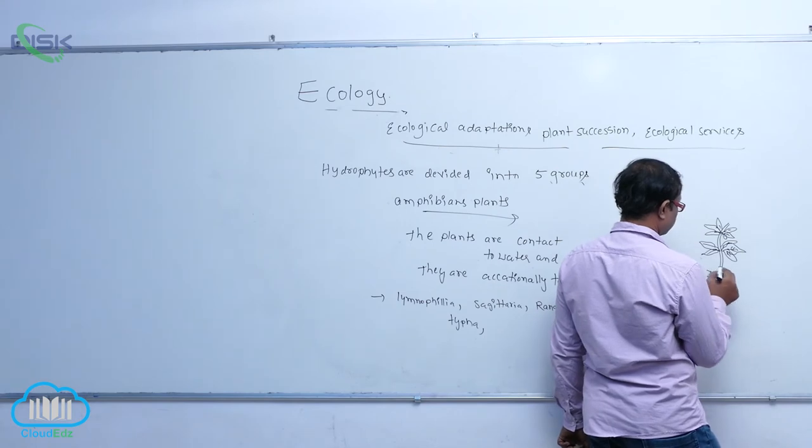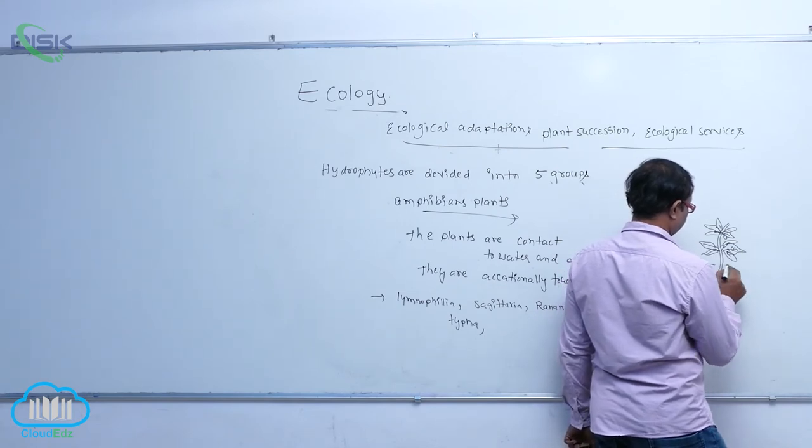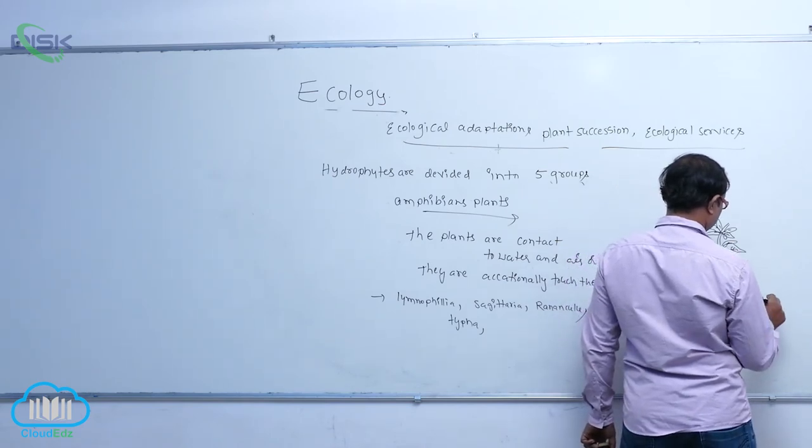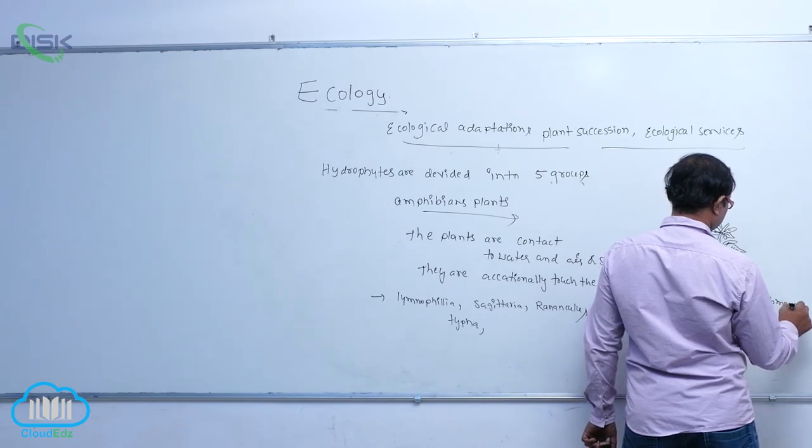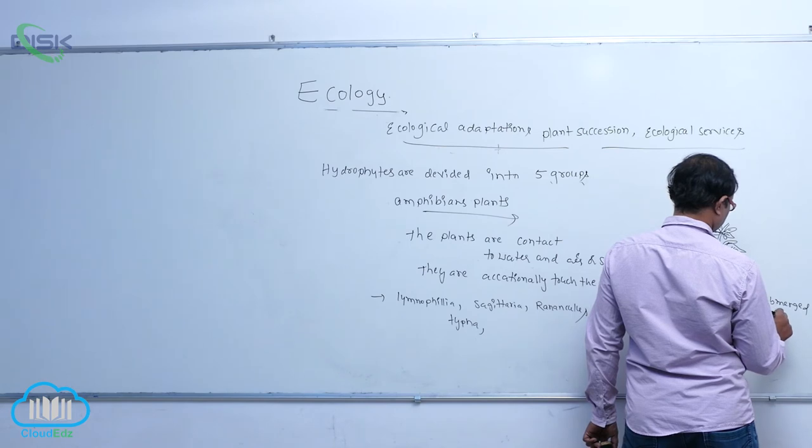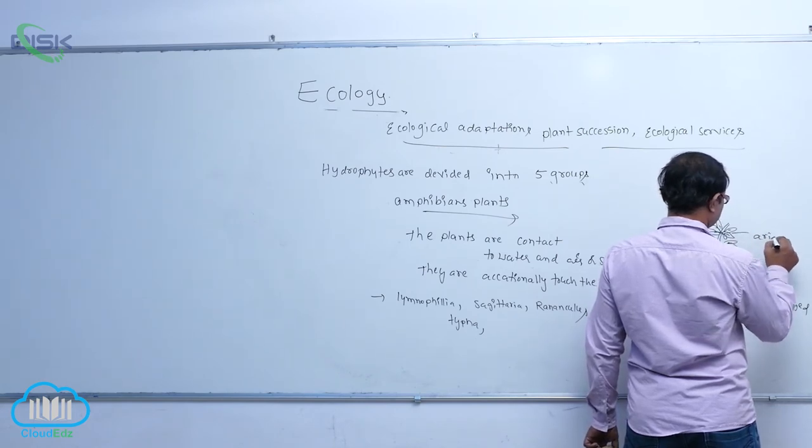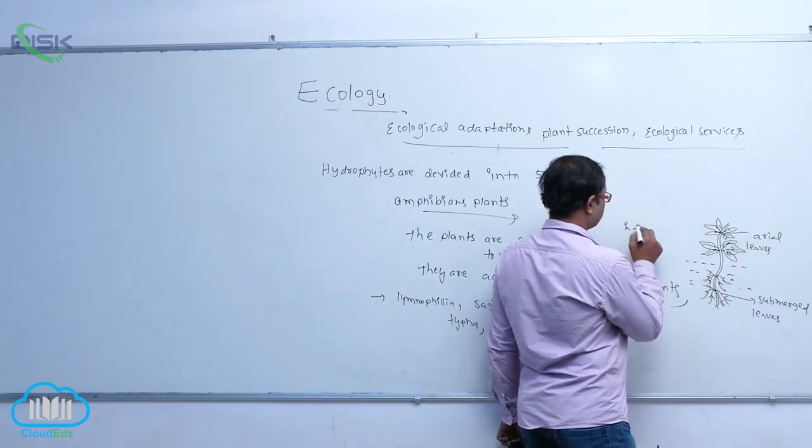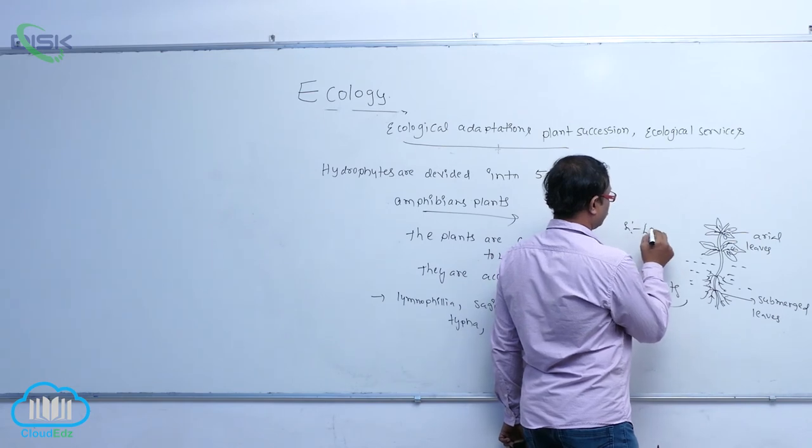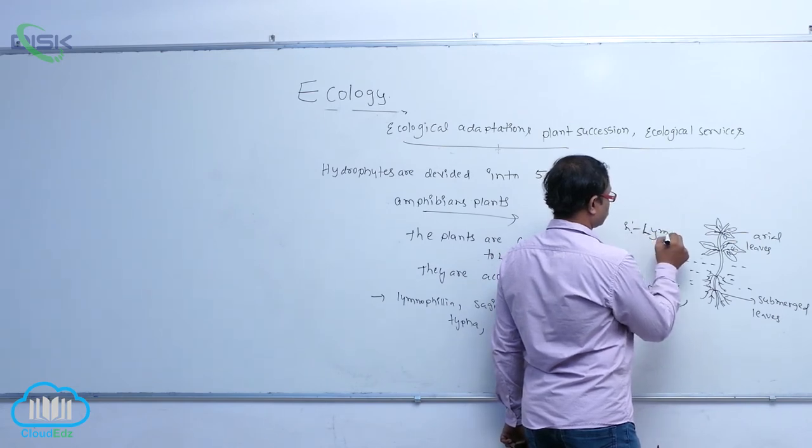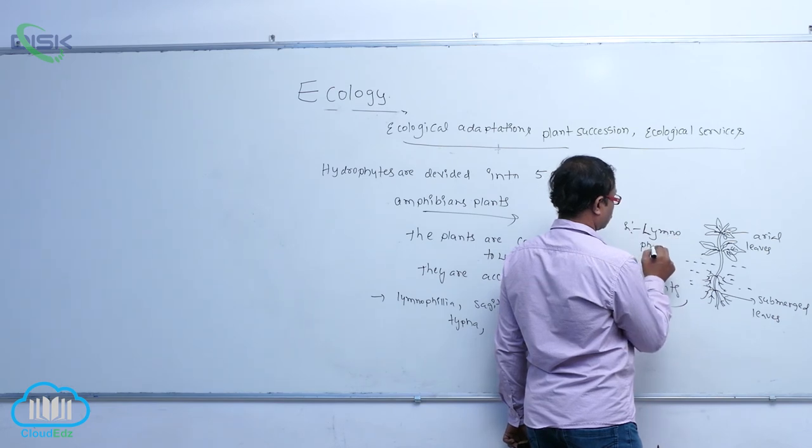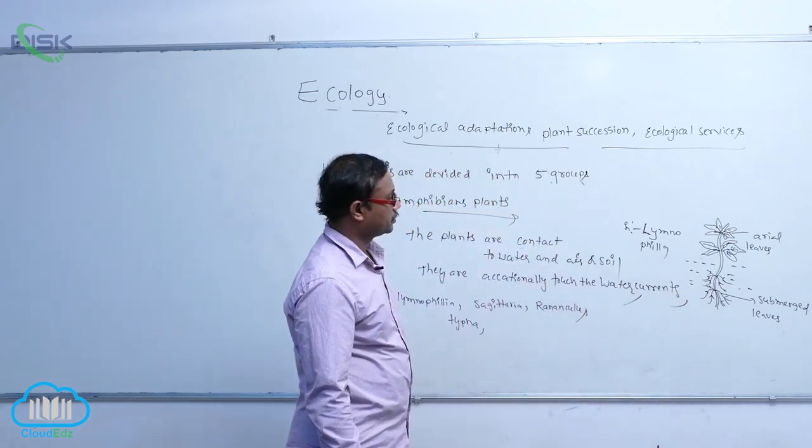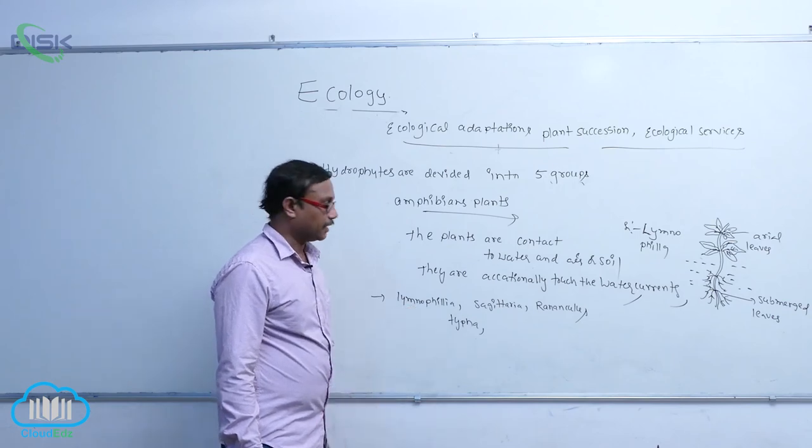They are showing you the two types of leaves: submerged leaves and aerial leaves. It is an example for Limnophylla. Two types of leaves, aerial leaves and submerged leaves. They are known as amphibious plants.